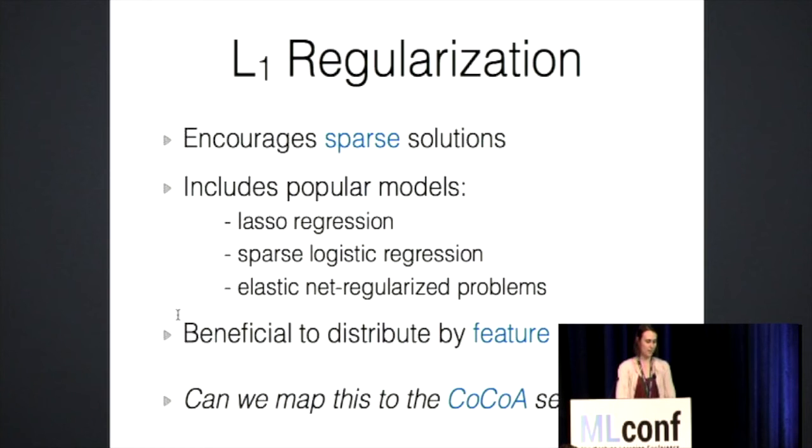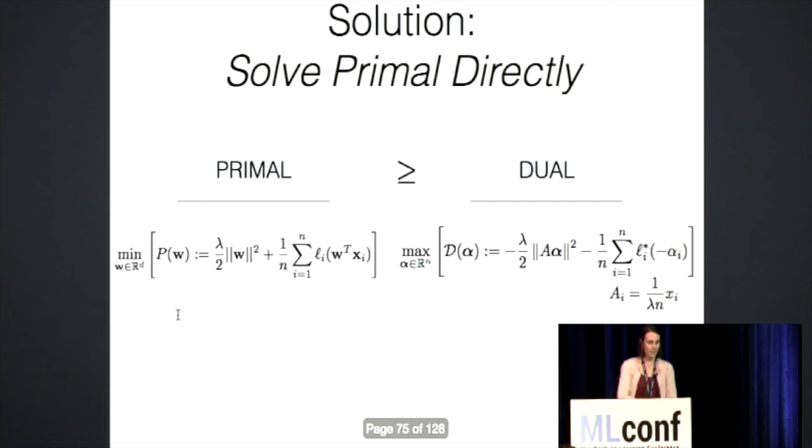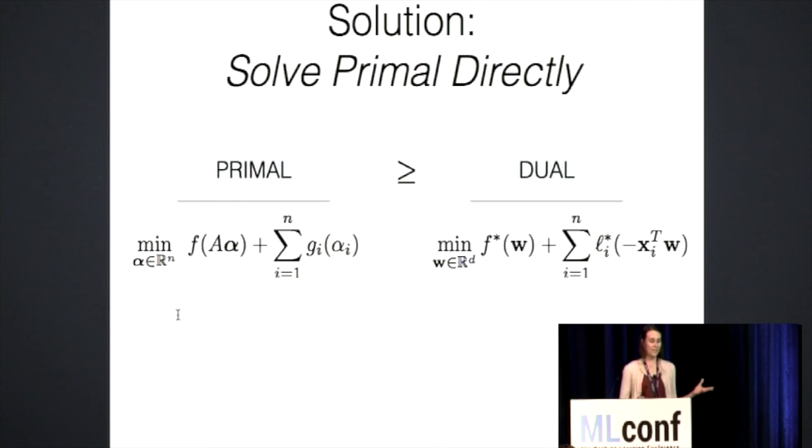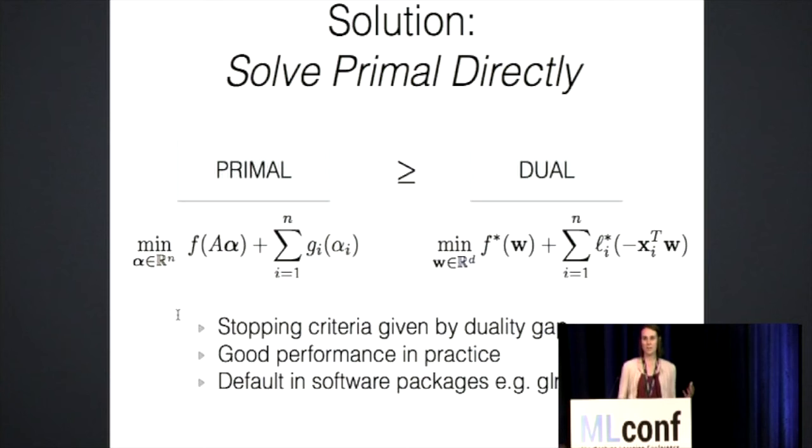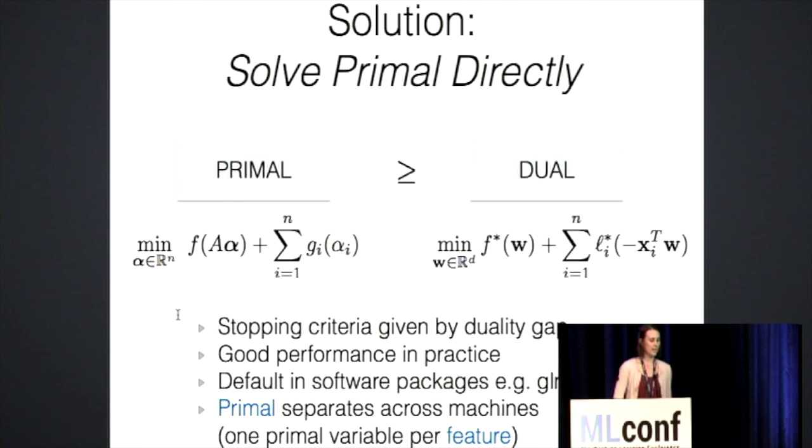So the question was how can we map this all to the CoCoA setup? And the solution that we came up with, and in the interest of time, I'm sweeping a lot of the theoretical results under the rug here, but basically we've significantly generalized the models that we're looking at. And what we found is that in this setting where we're solving these L1 regularized problems, it's actually beneficial to solve them directly in the primal rather than in the dual. And what's the reason for that? One is, we have this primal-dual setup. We still have a stopping criteria given by the duality gap, which is nice. But now solving the primal rather than the dual is very common in practice. So that's the default in software packages like GLMNet that run coordinate descent for these L1 regularized problems in the primal. It's also nice in our setting because if we're assuming that the data is distributed by feature, this primal objective will now be more easy to separate across machines where we have one primal variable per feature.